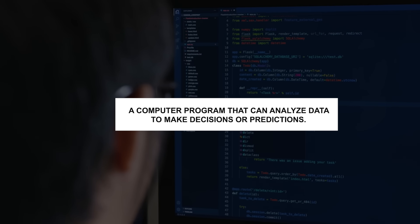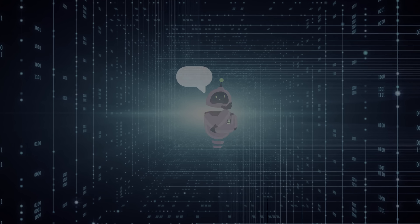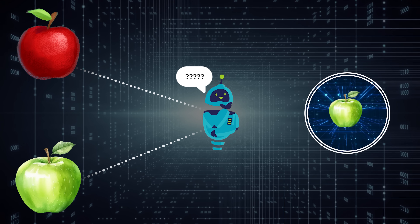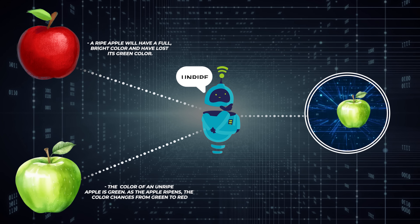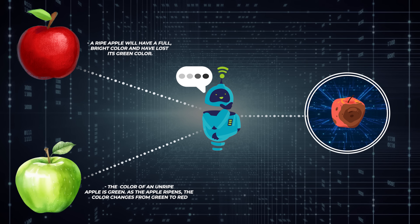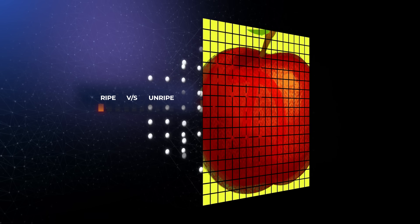AI is largely powered by machine learning, which is a computer program that can analyze data to make decisions or predictions. For example, a machine learning program could determine if an apple is ripe or unripe. To train this model, you show it lots of examples of ripe and unripe apples, and it learns the characteristics that determine ripeness. The quality of the data you provide determines how good the model is.